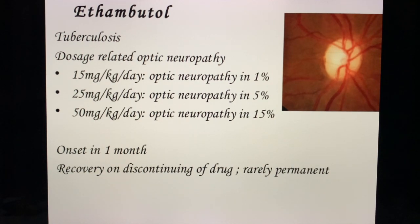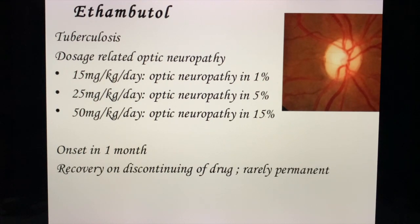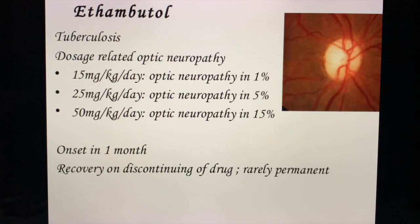If a patient presents with loss of color vision or decrease in visual acuity while being treated with ethambutol, the first thing to do is discontinue the drug. Recovery usually occurs after discontinuation and is rarely permanent.